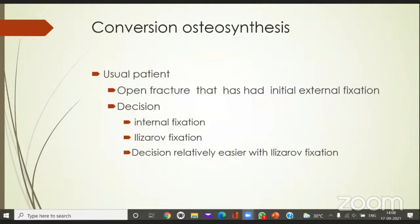Conversion osteosynthesis — I think in this institution or anywhere, this would be the most ideal case for ring fixation. The usual patient is somebody who has had an open fracture, dealt initially with an external fixator, and then the wound has settled. The decision then is: do I convert it into internal fixation — a plate or an intramedullary nail — or do I go with some kind of external fixation like Ilizarov? The decision becomes relatively easier in the case of tibia because the rings are not that cumbersome. You always have the apprehension of pin tracts that might lead to infection, but Ilizarov addresses this.